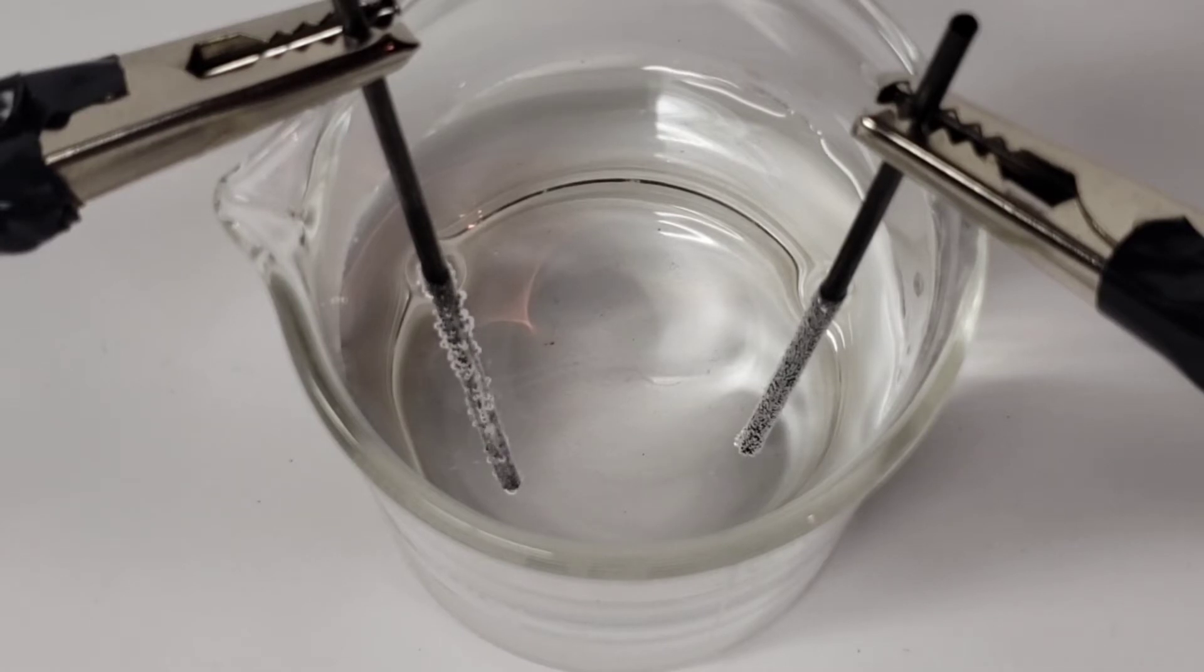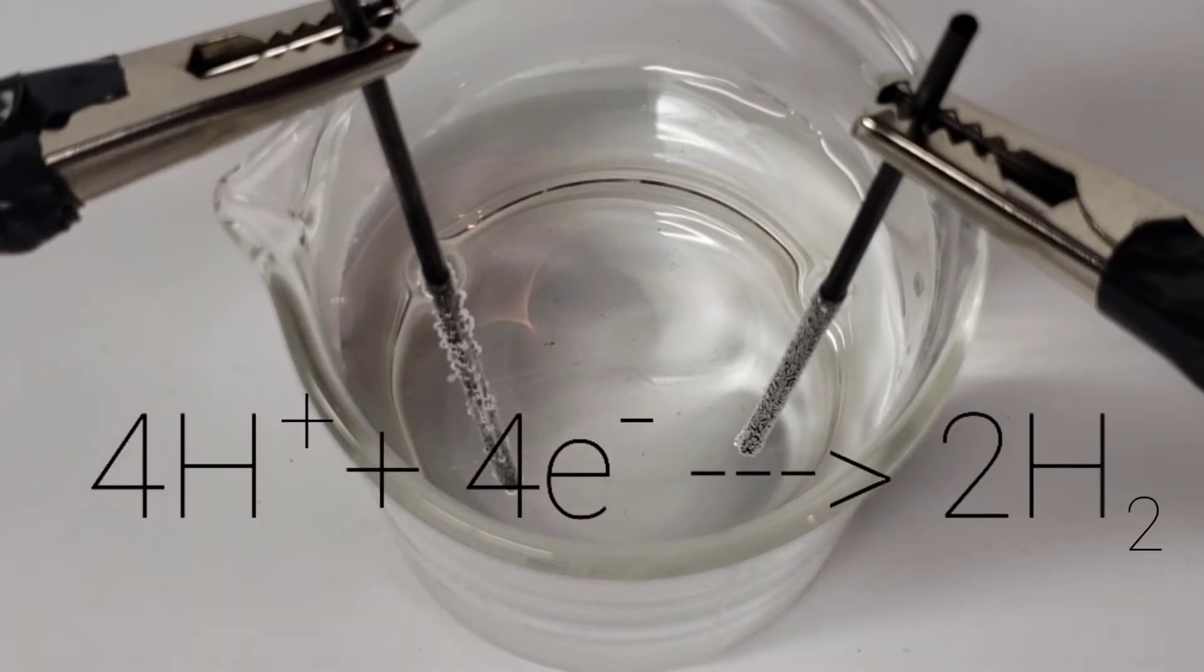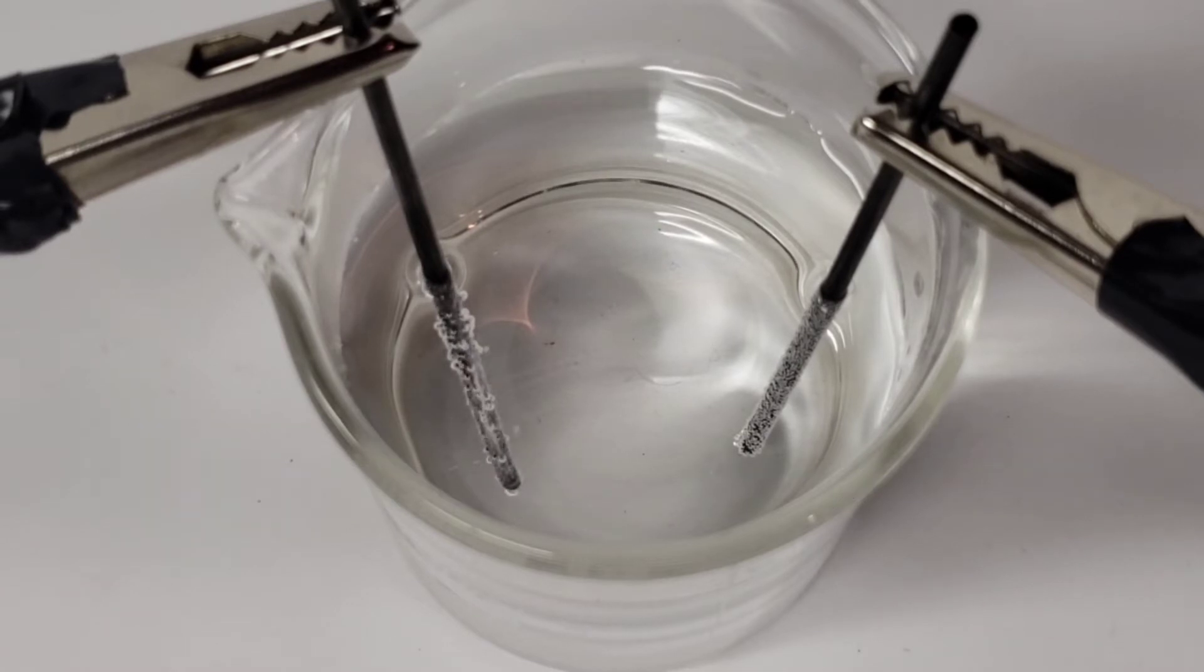Now over to the cathode side of the reaction, where the aforementioned protons and electrons from the hydrogen combine back together to form two molecules of hydrogen gas. So the products of these reactions together are that the anode produces oxygen gas as bubbles, and the cathode produces hydrogen gas as bubbles.